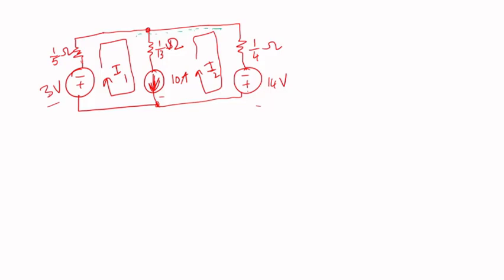Basically what I'm circling here, I'm gonna treat as a super mesh. Then I'm gonna write a KVL around the super mesh. In other words, KVL from here, so I'm gonna go from here all the way to here in the back. I'm not gonna go inside the meshes.